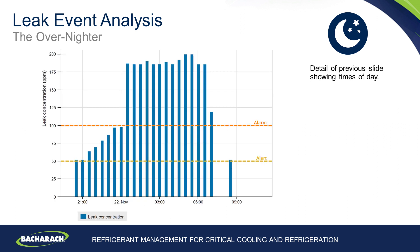Looking at that same leak pattern in more detail over a 12-hour period — from 9pm the PPM values rise as that walk-in cooler is used less and less. Over the overnight period between midnight and 6am, when it is completely closed, the PPM values rise. The values, up to 200 PPM, are not large, but even though they are not huge PPM values, a leak is there. If we can identify it and rectify it quickly and easily, we will reduce refrigerant loss immensely.